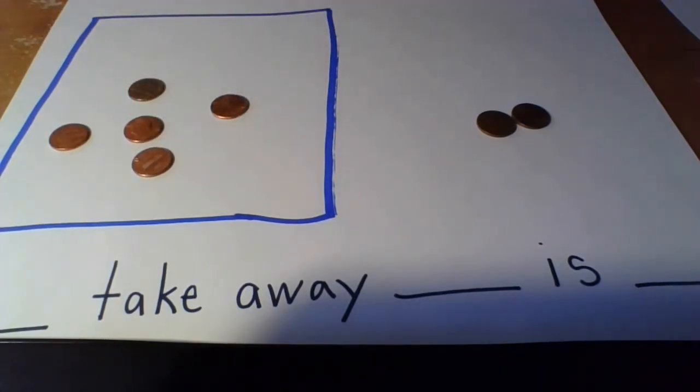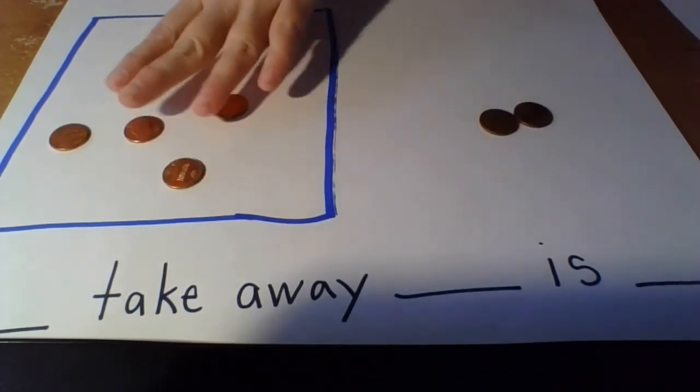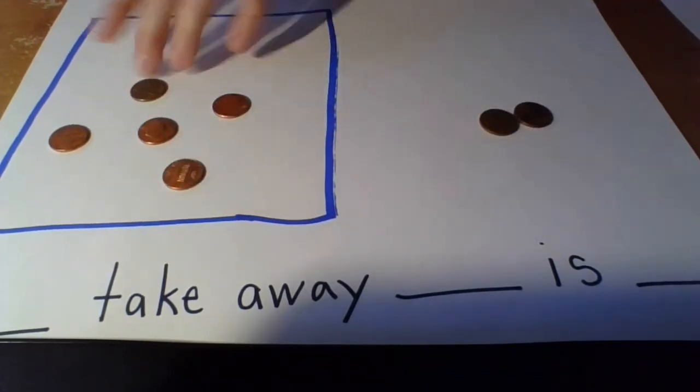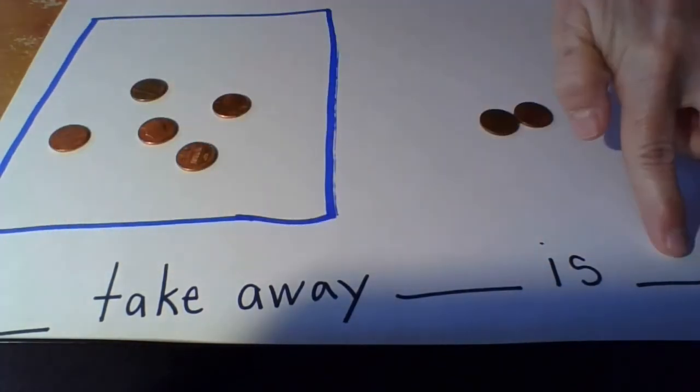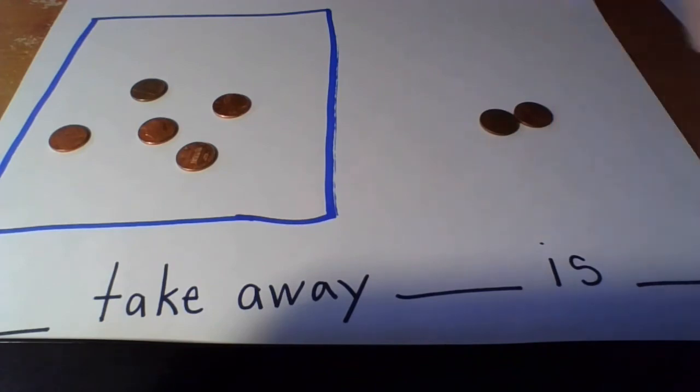Encourage your children to move the manipulatives as they're taking them away. Make sure they're going back and counting how many are left, and have them use the vocabulary you see at the bottom. Seven take away two is five.